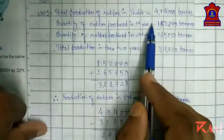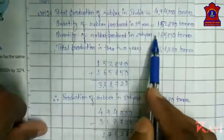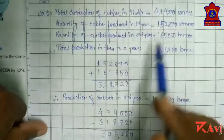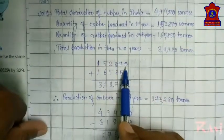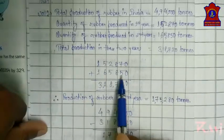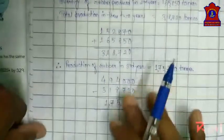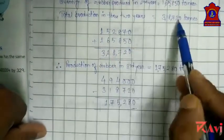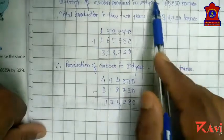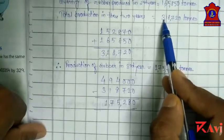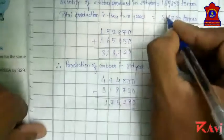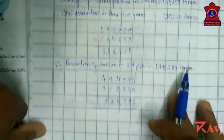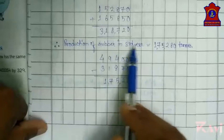The third year is not given, so we will find the total production of rubber in the first two years. We add one lakh fifty-two thousand eight hundred seventy plus one lakh sixty-five thousand eight hundred fifty. After adding we get three lakh eighteen thousand seven hundred twenty tons. So the production of rubber in these two years is three lakh eighteen thousand seven hundred twenty tons.